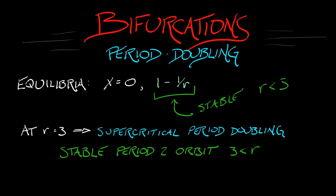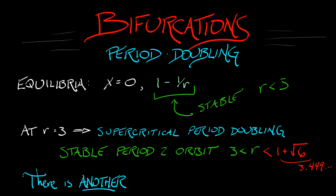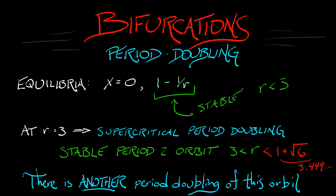This works when r is bigger than 3, but it doesn't last forever. It lasts for values of r up to 1 plus the square root of 6, which is about 3.449. What happens at 1 plus root 6? At this parameter value, there's another period-doubling bifurcation — but not a period-doubling bifurcation at an equilibrium. It is the periodic orbit itself that undergoes a period-doubling bifurcation.